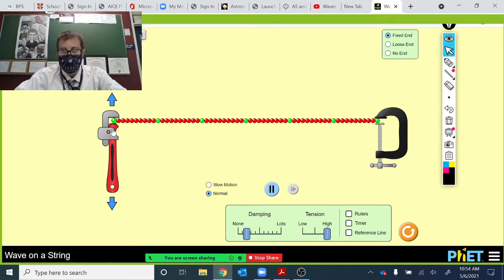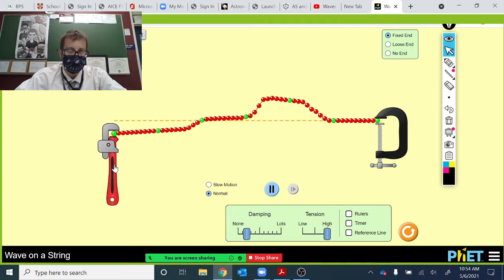A progressive wave is a wave that transfers energy. A periodic disturbance oscillating through a medium is what characterizes a wave. If I disturb this medium, this string here with this wrench, you can see that all the particles are disturbed.